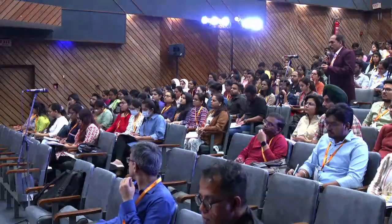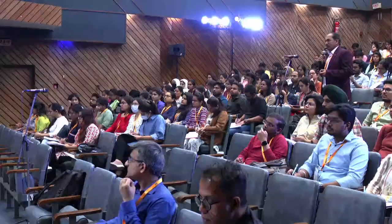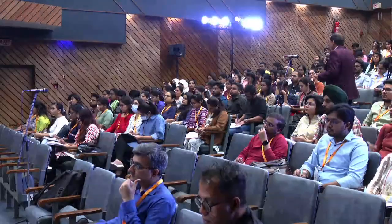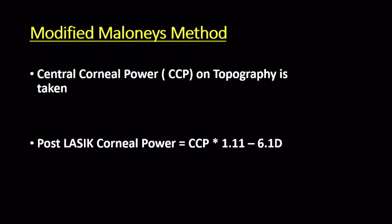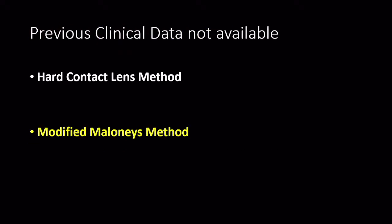To convert retinoscopy findings to the patient's refraction: subtract the working distance allowance (and cycloplegia correction if applicable) from one meridian and use that as the sphere. The difference between the two meridians gives the cylinder power, placed in the appropriate axis.